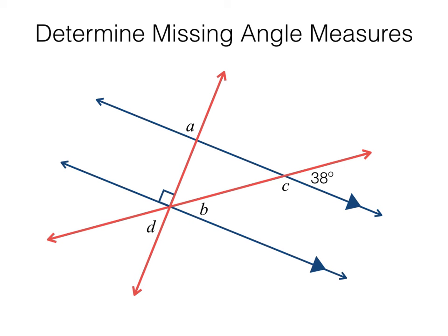This diagram shows a pair of parallel lines and two transversals. You are asked to solve for the angles marked A, B, C, and D. Angle A measures 90 degrees since it forms a pair of corresponding angles with the right angle shown in the diagram, and corresponding angles are congruent. Angle B forms a corresponding angle with the angle marked as 38 degrees, therefore angle B measures 38 degrees.